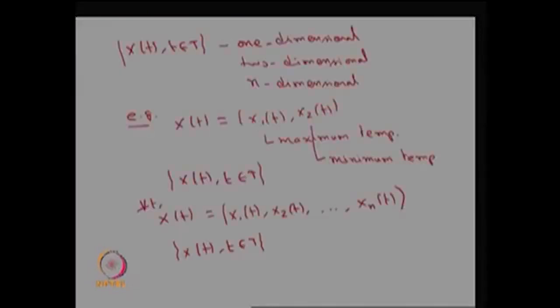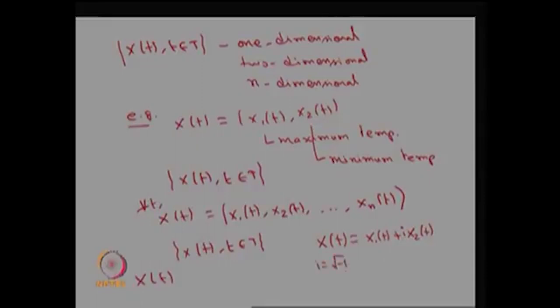We can also create a complex-valued stochastic process. Define x(t) = x1(t) + i·x2(t), where i is the complex quantity, the square root of minus 1. Here x1(t) is a real-valued random variable for fixed t, and x2(t) is also a real-valued random variable for fixed t. This makes x(t) a complex-valued random variable for fixed t, forming a complex-valued stochastic process.